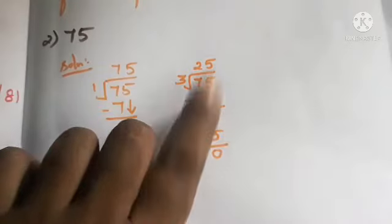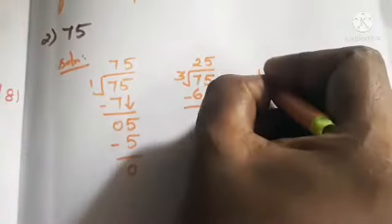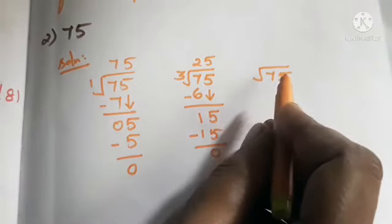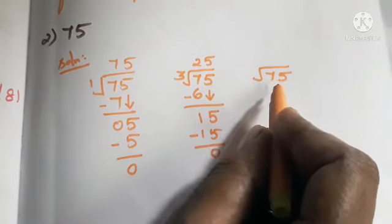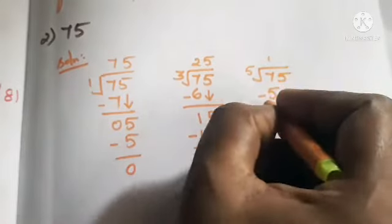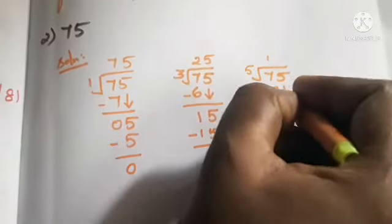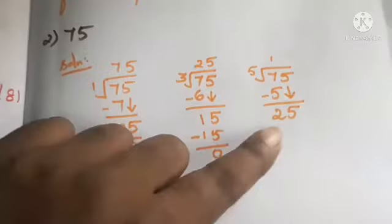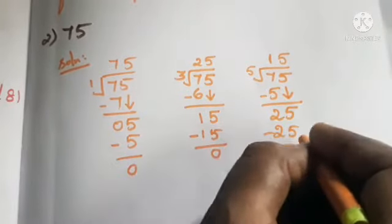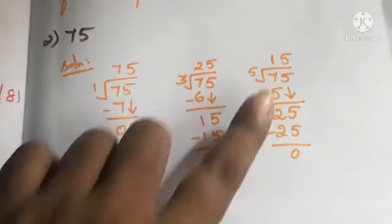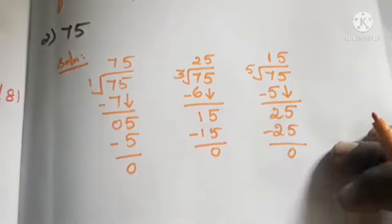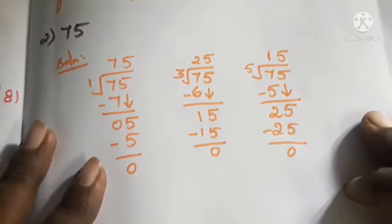Check 4: not possible. Check 5: since the ones place is 5, we know 75 is divisible by 5. Divide: one 5 is 5; 7 minus 5 is 2. Bring down 5 to get 25. Five 5s are 25; 25 minus 25 is 0. Remainder is 0, so 5 and 15 are factors of 75. Checking 6, 7, 8, 9, 10 — none are possible.